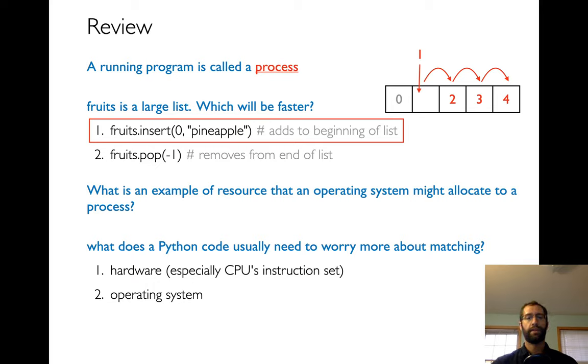Okay, so next question. What is an example of a resource that an operating system might allocate to a process? Well, it turns out there's lots of resources. But the big one we talked about last time was time on the CPU. You know, CPUs used to have one core in them. Now they might have a few.